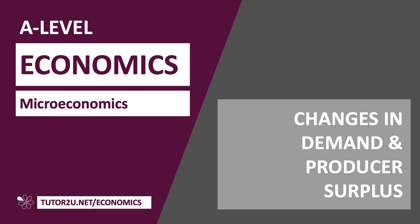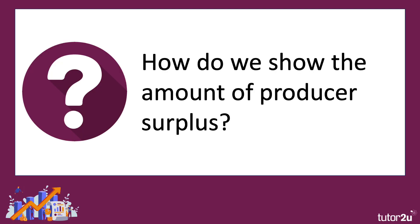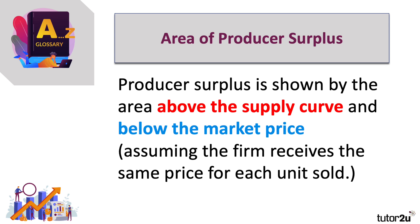Hi there. Here's a short video looking at how changes in demand affect producer surplus. Producer surplus is the difference between the price producers are willing and able to supply a product for and the price they get in the market — the revenue they get from manufacturing or growing a product. We show the amount of producer surplus by the area above the supply curve and below the price, assuming the firm gets the same price for each unit sold.